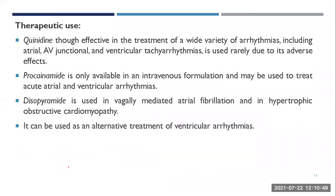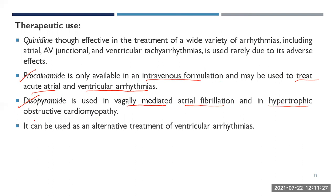Therapeutic uses of Class 1a drugs: quinidine is effective in treating a wide variety of arrhythmias including atrial, atrioventricular junctional, and ventricular tachyarrhythmias, but is used rarely due to adverse effects. Procainamide is only available in intravenous formulation and may be used to treat acute atrial and ventricular arrhythmias. Disopyramide is used in vagally mediated atrial fibrillation and hypertrophic obstructive cardiomyopathy.